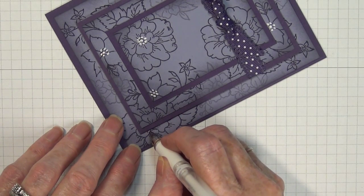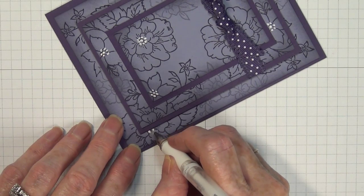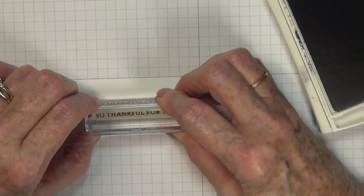I wanted to tell you also that that elegant eggplant scallop ribbon is right now on our clearance rack, so you can get a super deal on that, so be sure and check it out.